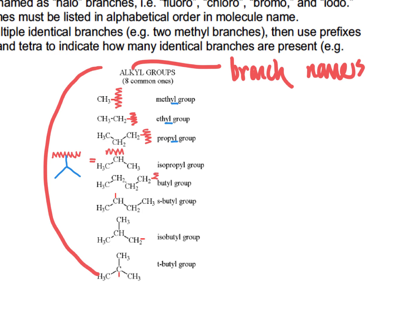For the sec-butyl group, drawing it as a line angle formula: the zigzag line is the longest carbon chain, and the branch connects at the second of those four carbons — a CH group bonded to a CH3 on the left, and a CH2 and CH3 on the right. You need to be familiar with and able to apply all of these branch names, both to draw structures from names and to write names from structures.